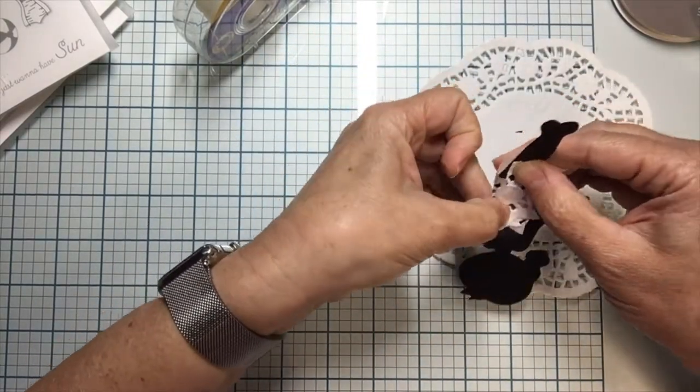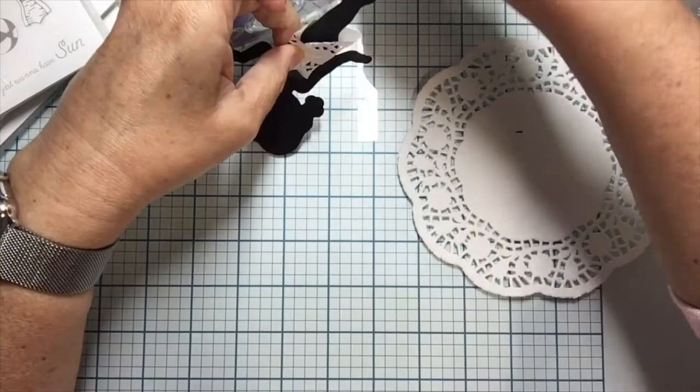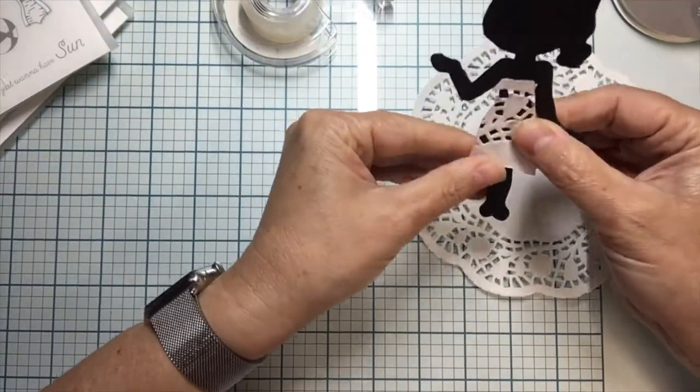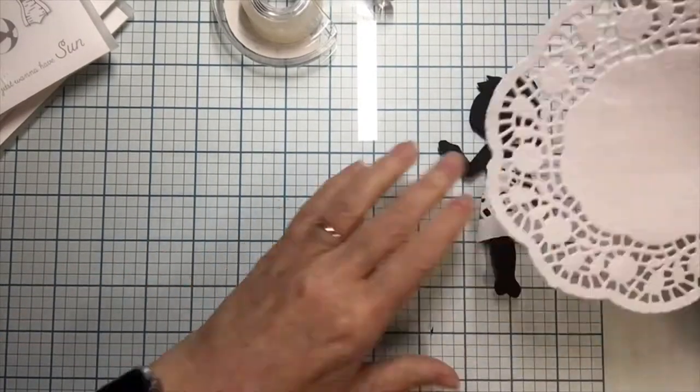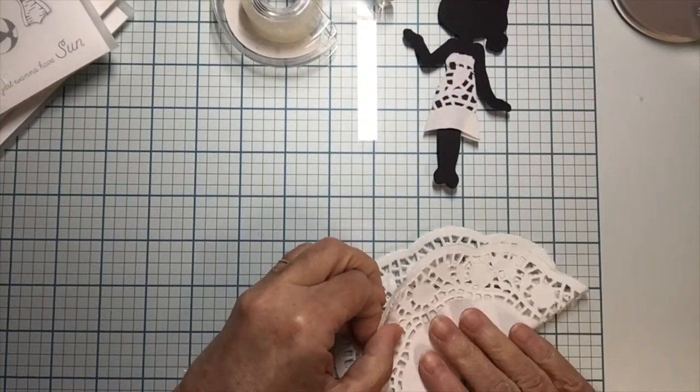I'm going to cut off that little other piece of scrap doily and I save it and I'll use it on a different project. Again, I'm using just a little bit of scotch tape to hold it so I can see how it looks. Wow, that looks almost cute enough to use it just like a little dress, doesn't it?